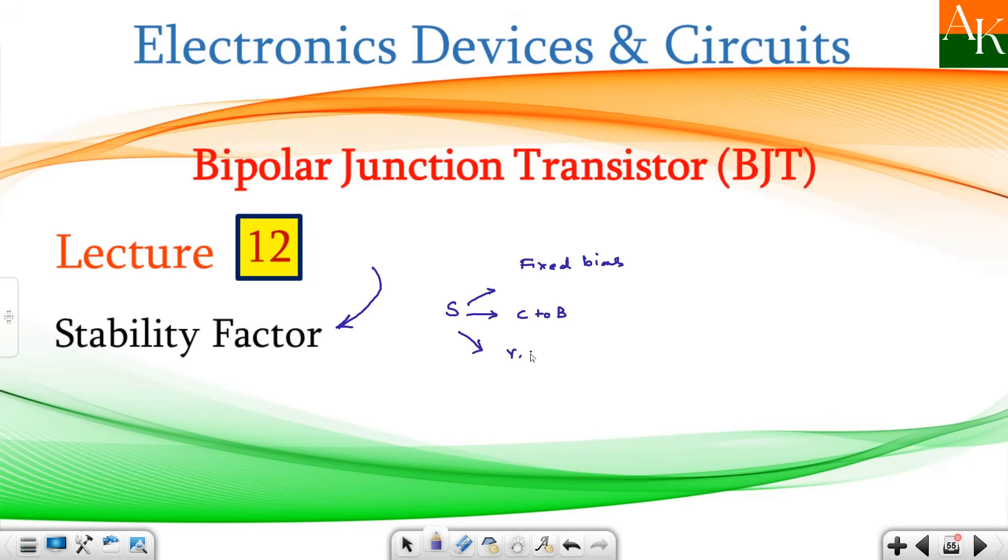And another one is voltage divider bias. These three circuits - this stability is always measured in terms of stabilization of a Q-point, that is what we will calculate.